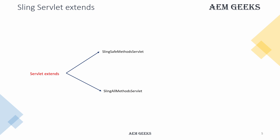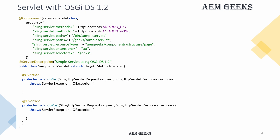When you write a servlet, you have to extend one of two classes: either SlingSafeMethodsServlet or SlingAllMethodsServlet. When you have only read operations or only the GET method, you can use SlingSafeMethodsServlet. But when you need both read and write — like GET and POST — you use SlingAllMethodsServlet. If you extend SlingSafeMethodsServlet and try to write a POST method, you will get an error. So if you need to perform both operations, extend SlingAllMethodsServlet.